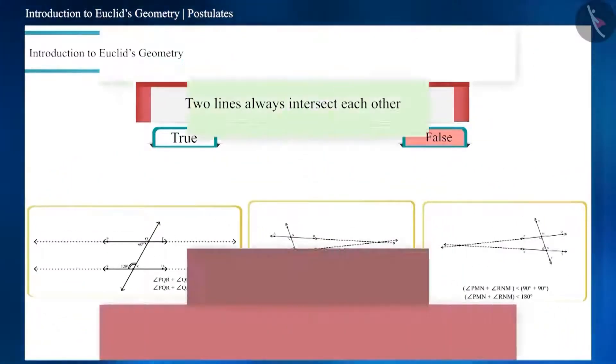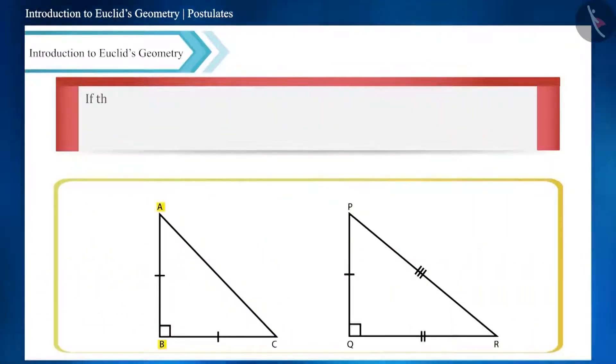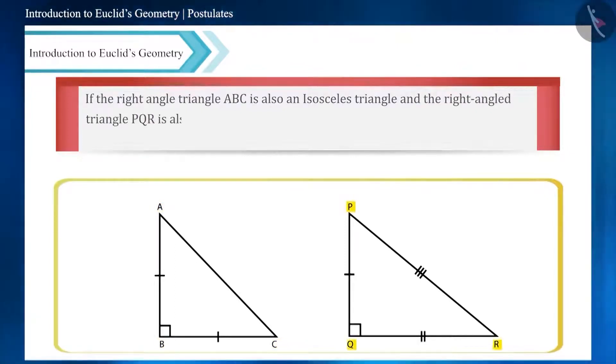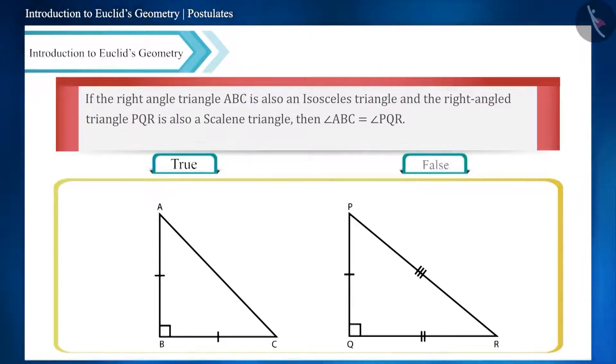If the right angle triangle ABC is also an isosceles triangle and the right angle triangle PQR is also a scalene triangle, then angle ABC will be equal to angle PQR. Is the given statement true or false?